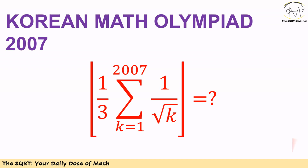Hello everyone. In this video we are going to talk about a problem from the Korean Math Olympiad from 2007. In this problem we have a summation of 1 over square root of k, for k between 1 and 2007. We need to find this expression, divide it by 3, and then find the final answer by applying the floor operator on it.